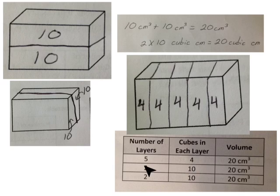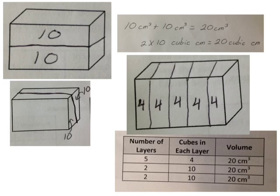This chart shows the three ways we divided the rectangular prism. In the first way, we had 5 layers with 4 in each layer — 20 cubic centimeters. The second shows 2 layers with 10 in each layer — 20 cubic centimeters. And the third also had 2 layers with 10 in each layer — 20 cubic centimeters.